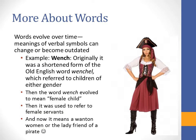Words evolve over time. When we think of words, we have to think of them as verbal symbols — they change, become outdated, and their meanings evolve. For example, the word 'wench' was originally a shortened form of the Old English word 'wenchel,' which referred to children of either gender. Then it evolved to mean a female child.